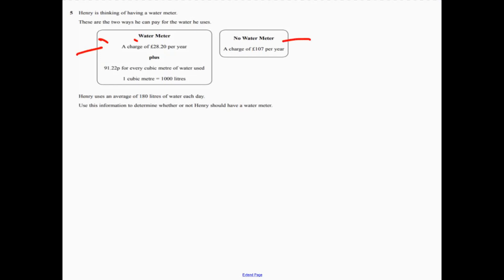So let's work out the cost of the water meter. We need to know, first of all, we're told how much it's going to be. Now, it tells us that Henry uses 180 litres of water each day. So let's think about that over the course of the year. So 180 litres multiplied by 365. So if we do that calculation, remember, you've got a calculator.